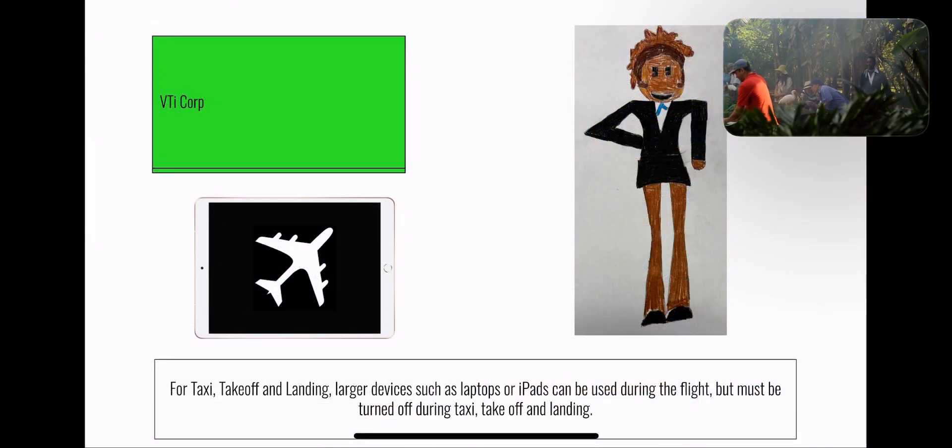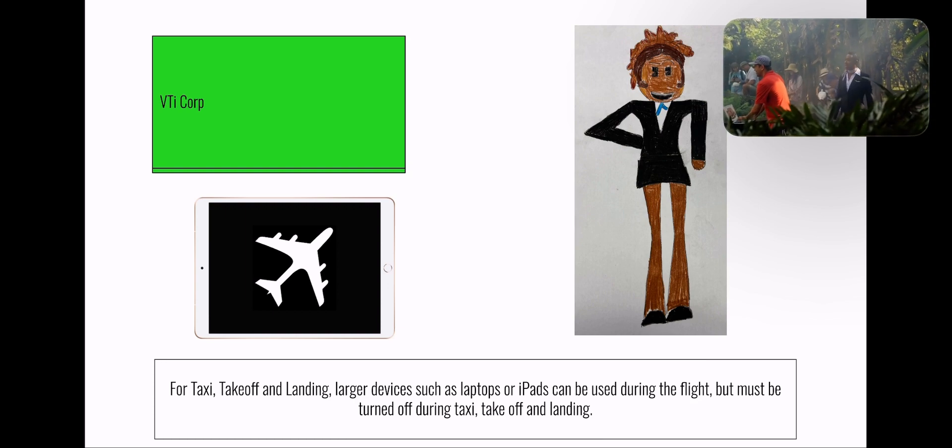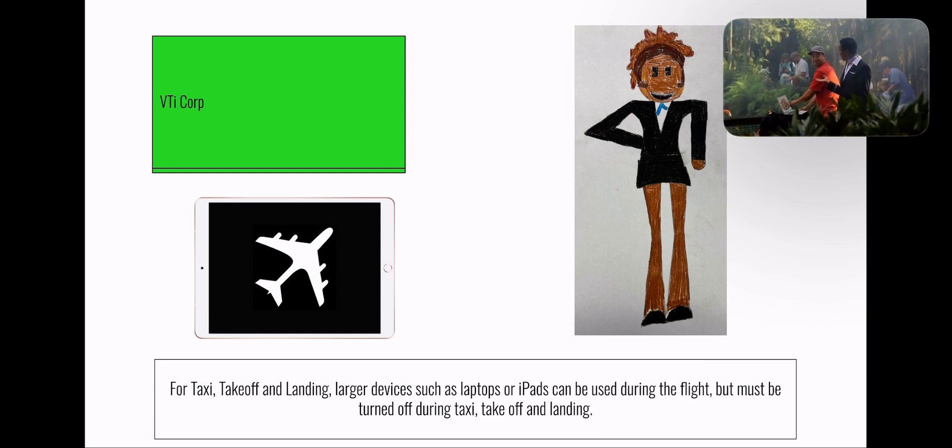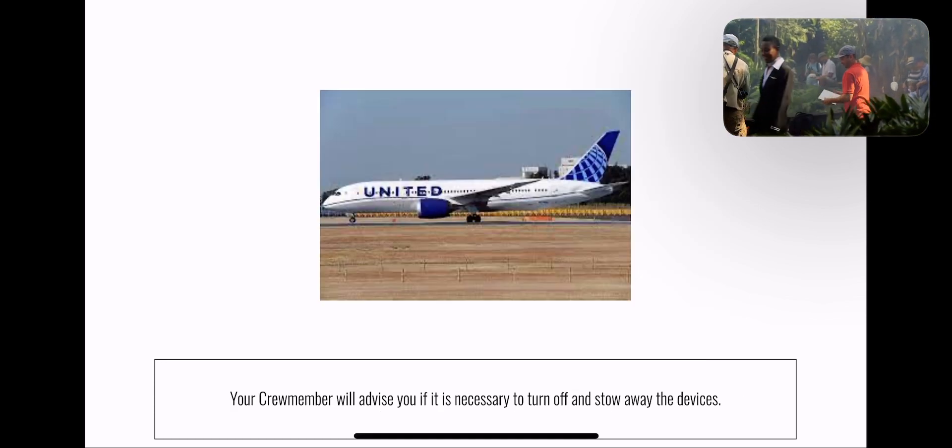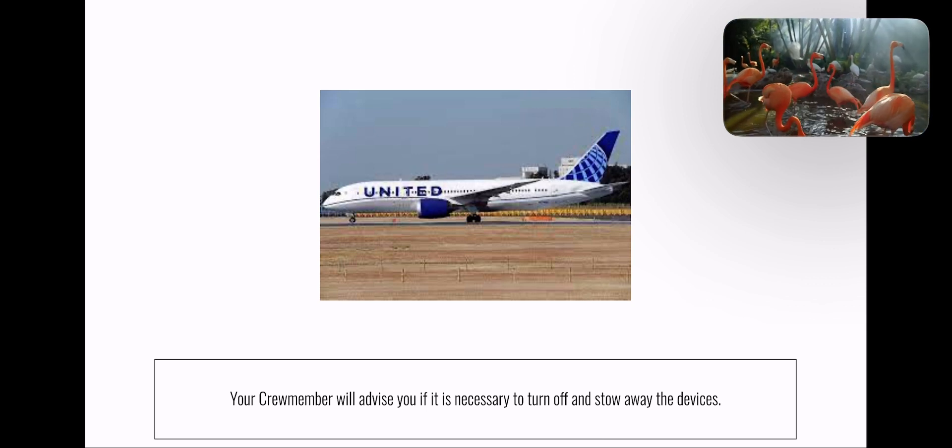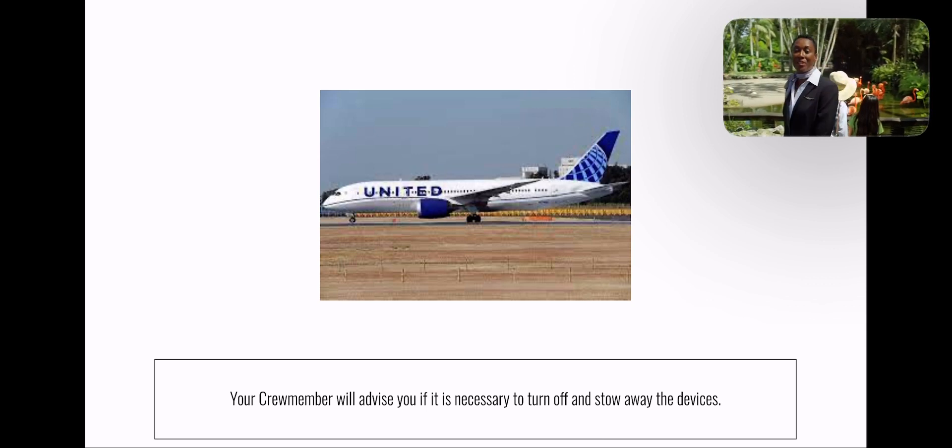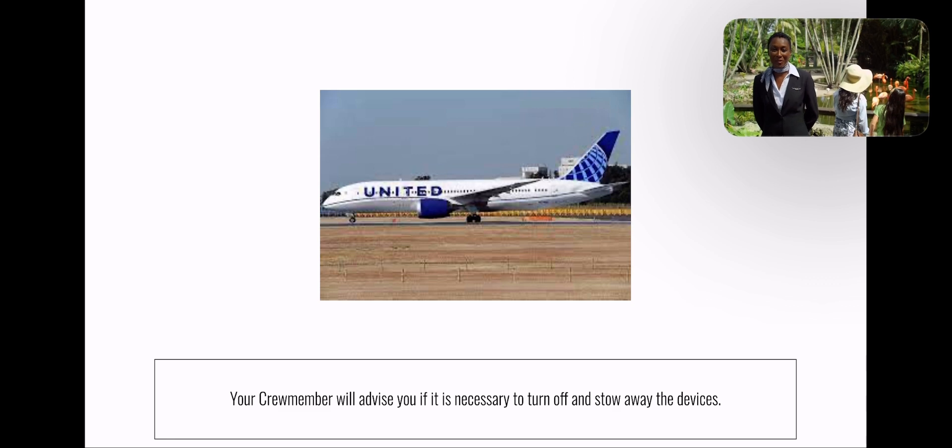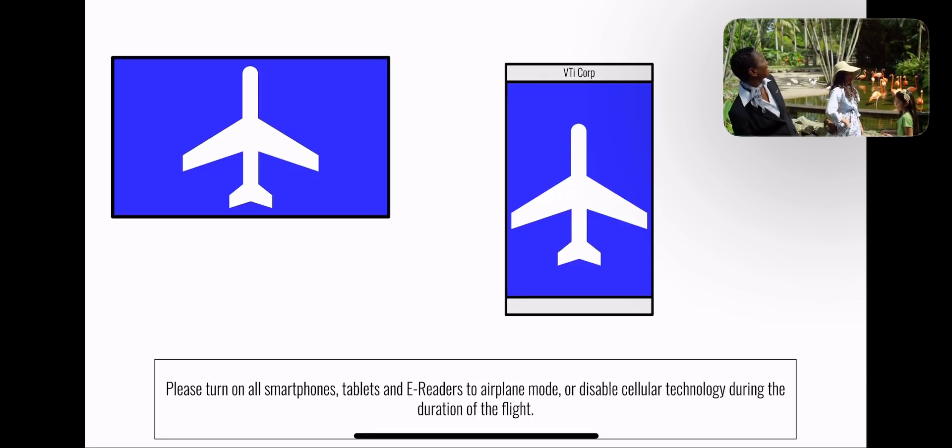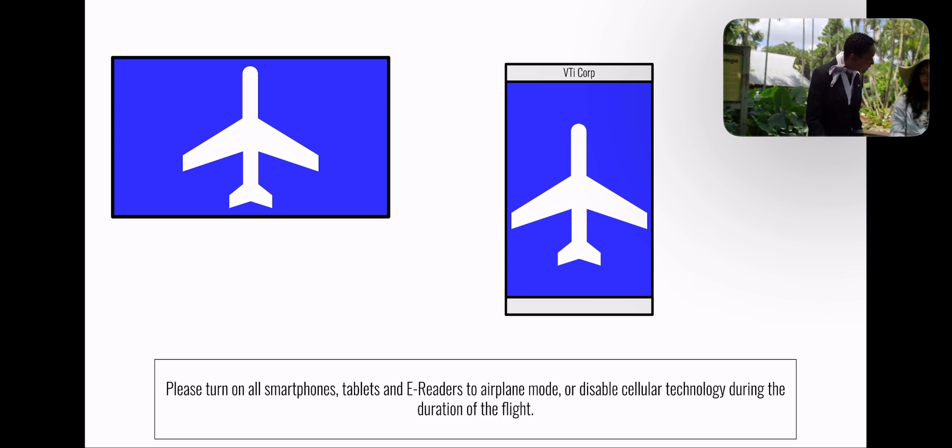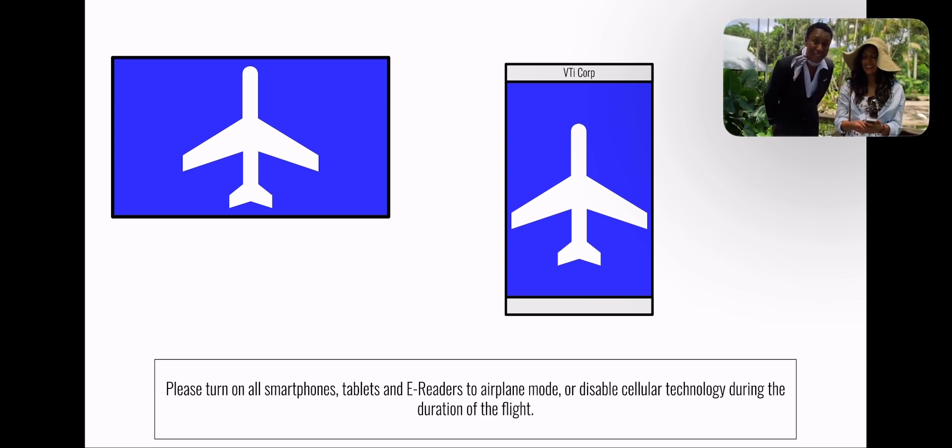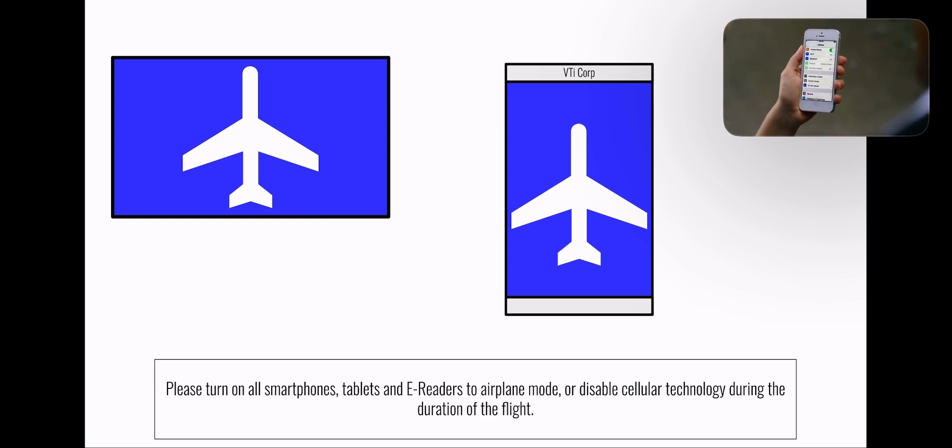For taxi, takeoff and landing, large electronic devices must be turned off and stowed. For international destinations, your flight attendants will advise you if it's necessary to turn off and stow your device. Make sure you've switched all smartphones, tablets, and e-readers to airplane mode.